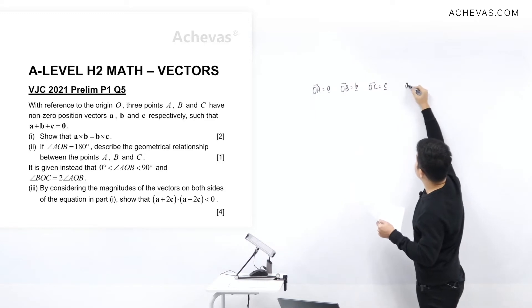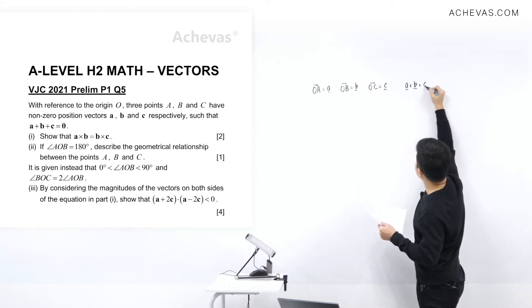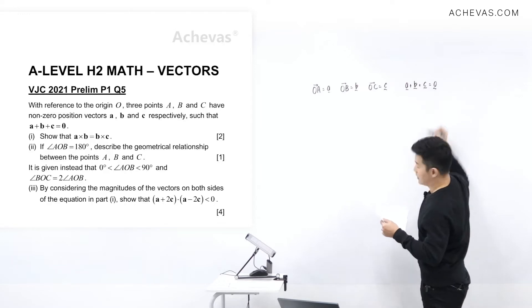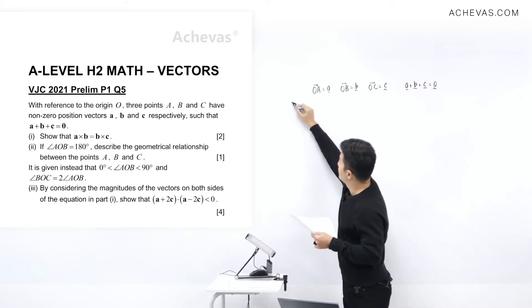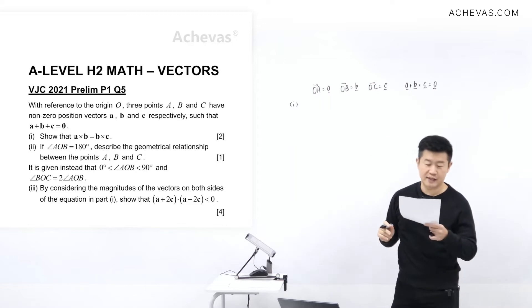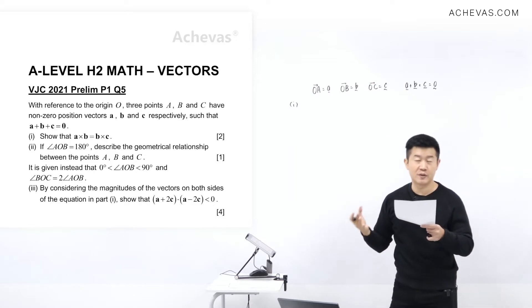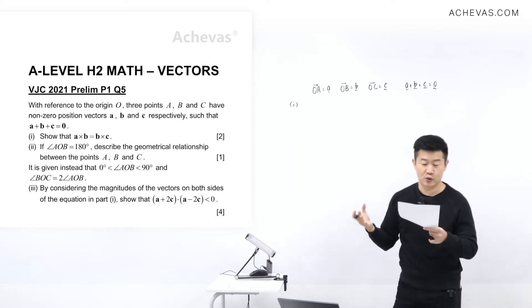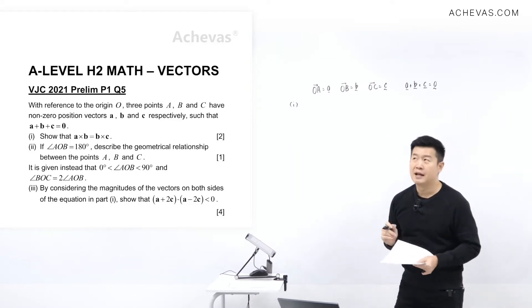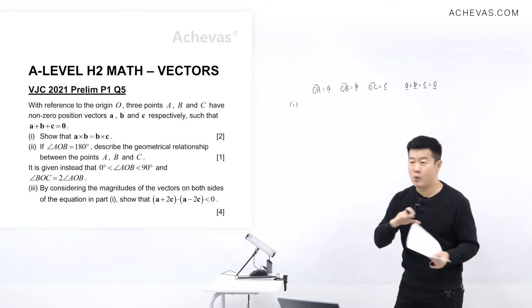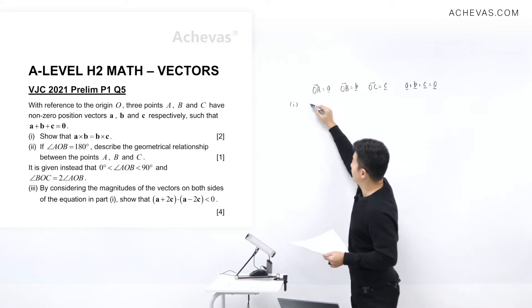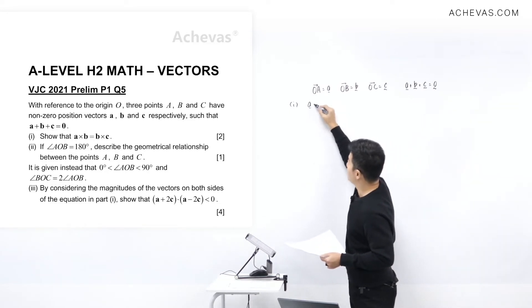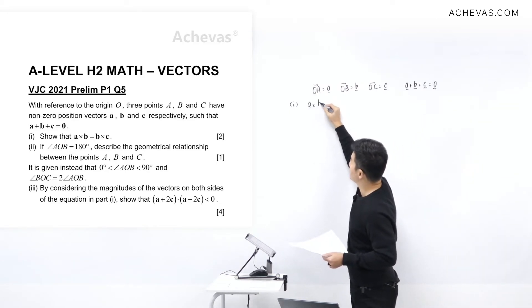We are also given that vector a plus vector b plus vector c equals the zero vector. For Part 1, we are supposed to show that a cross b is equal to b cross c. Let's start with the left hand side, so a cross b.